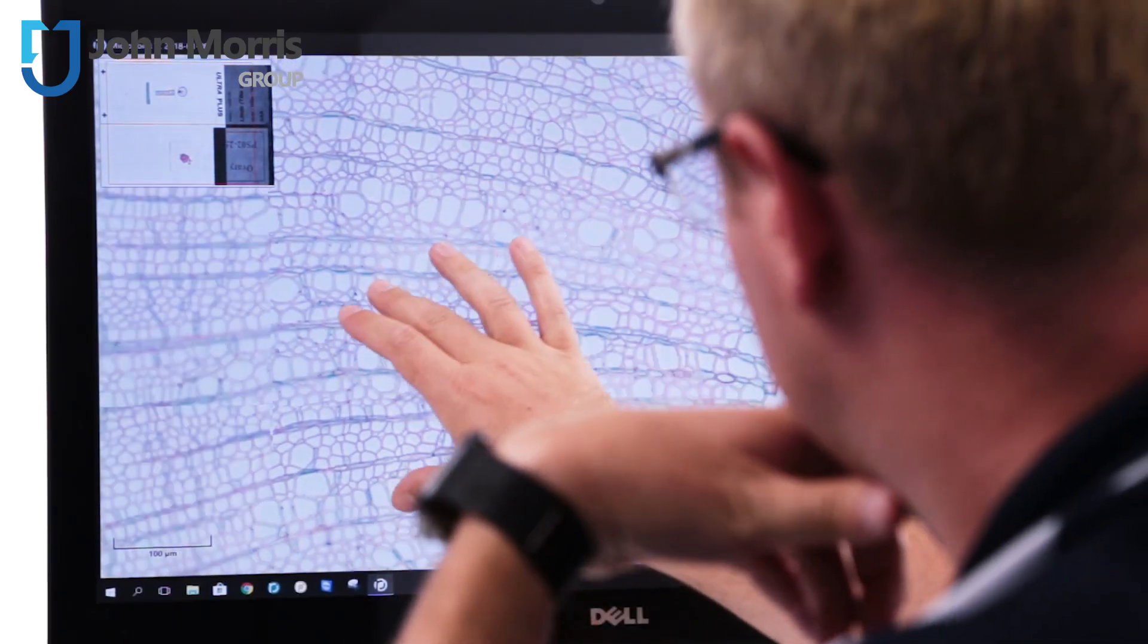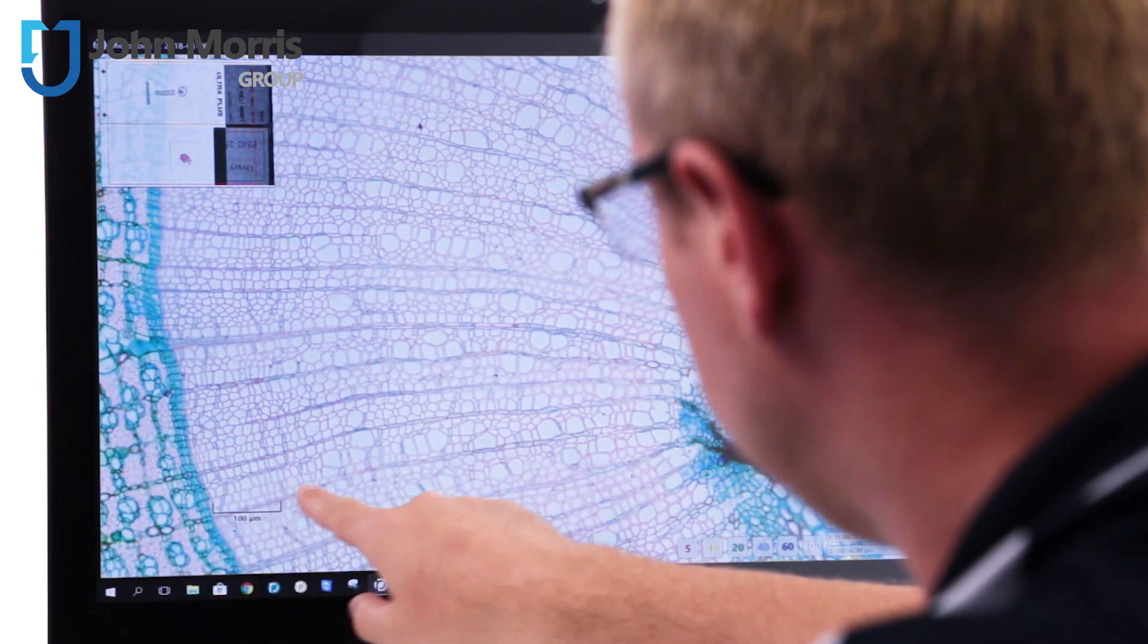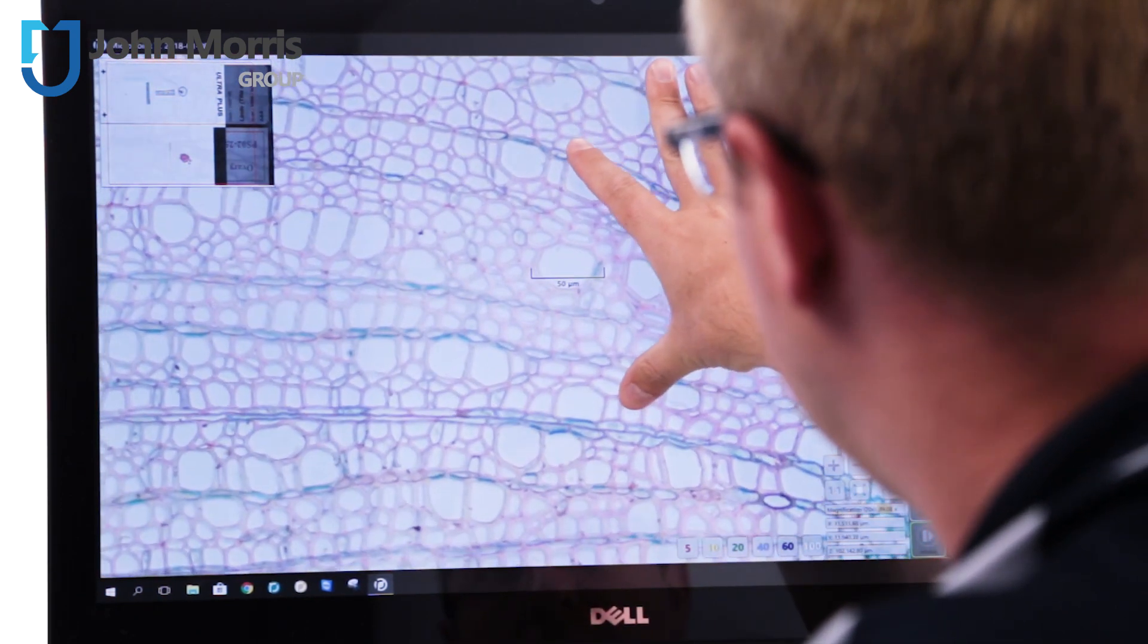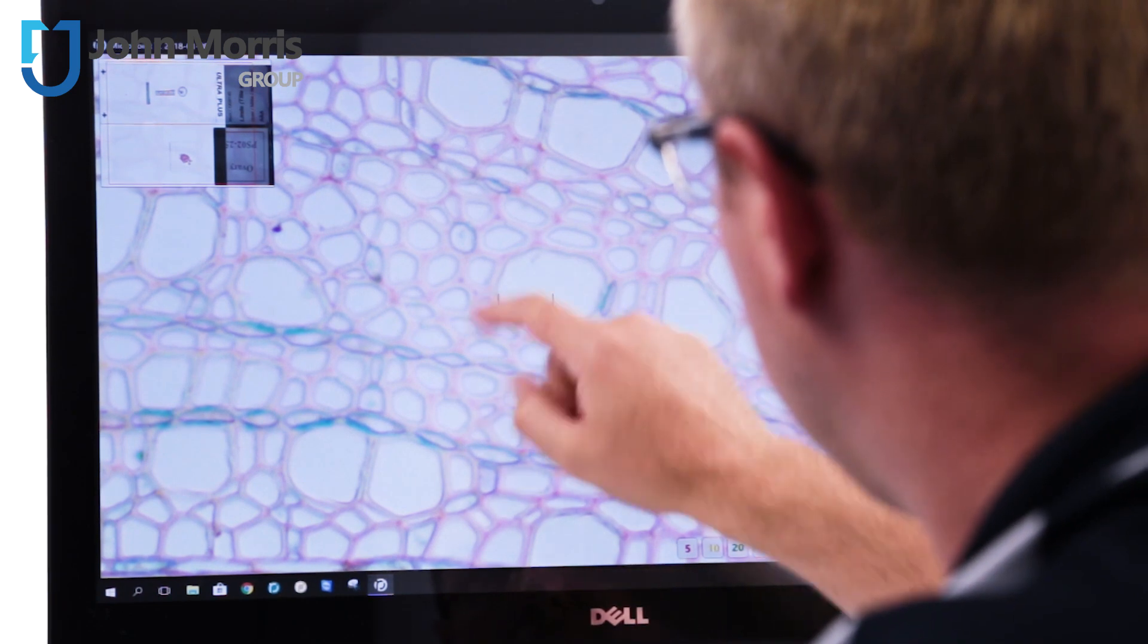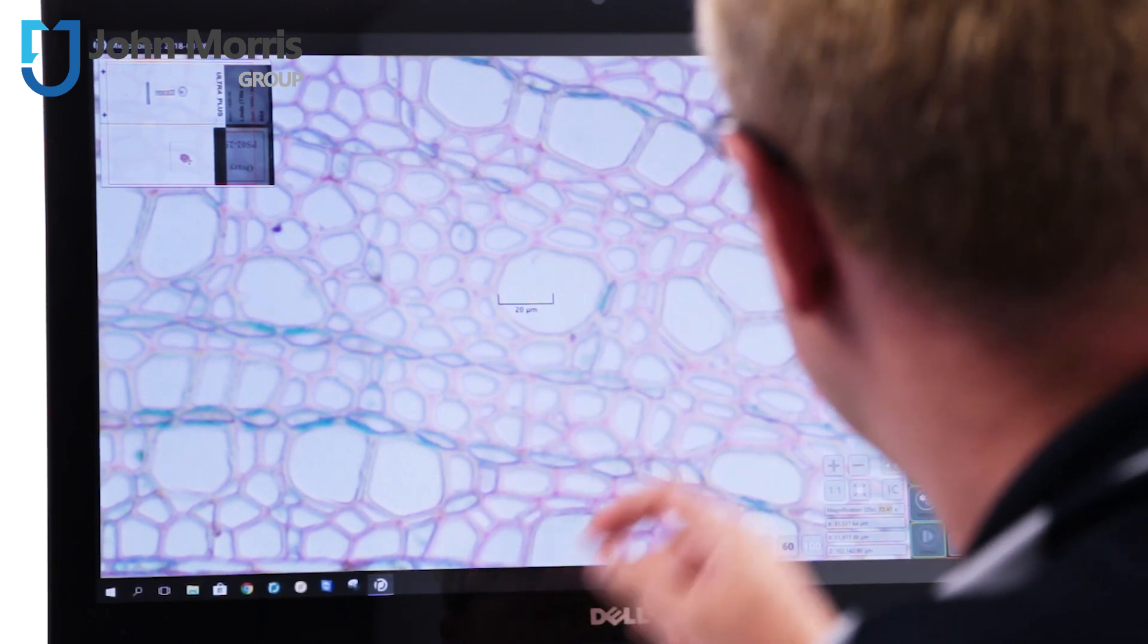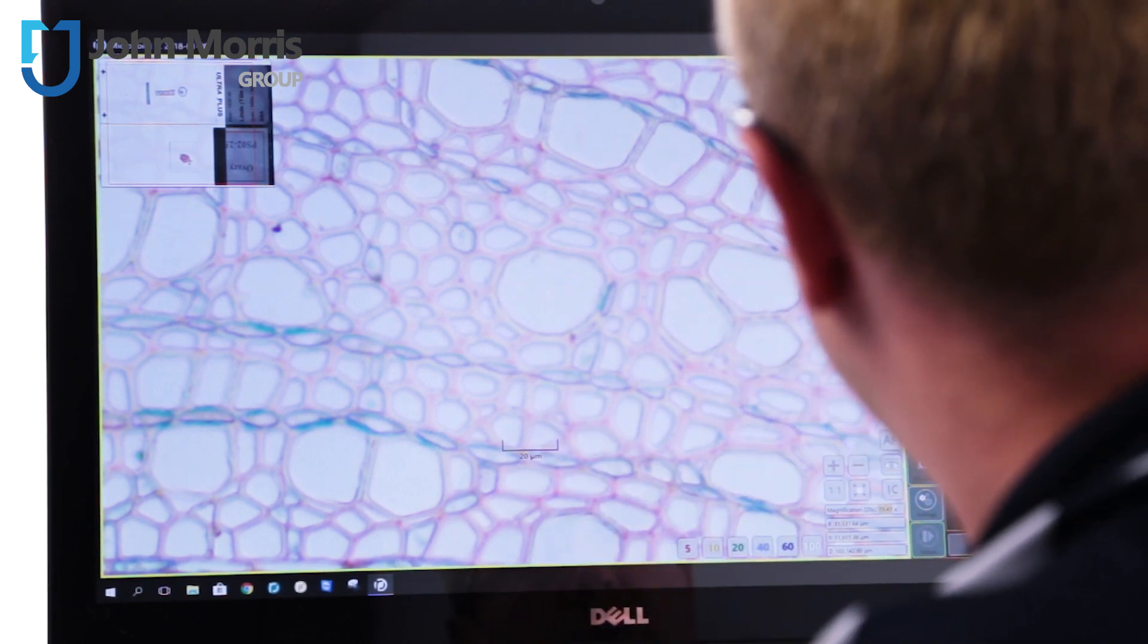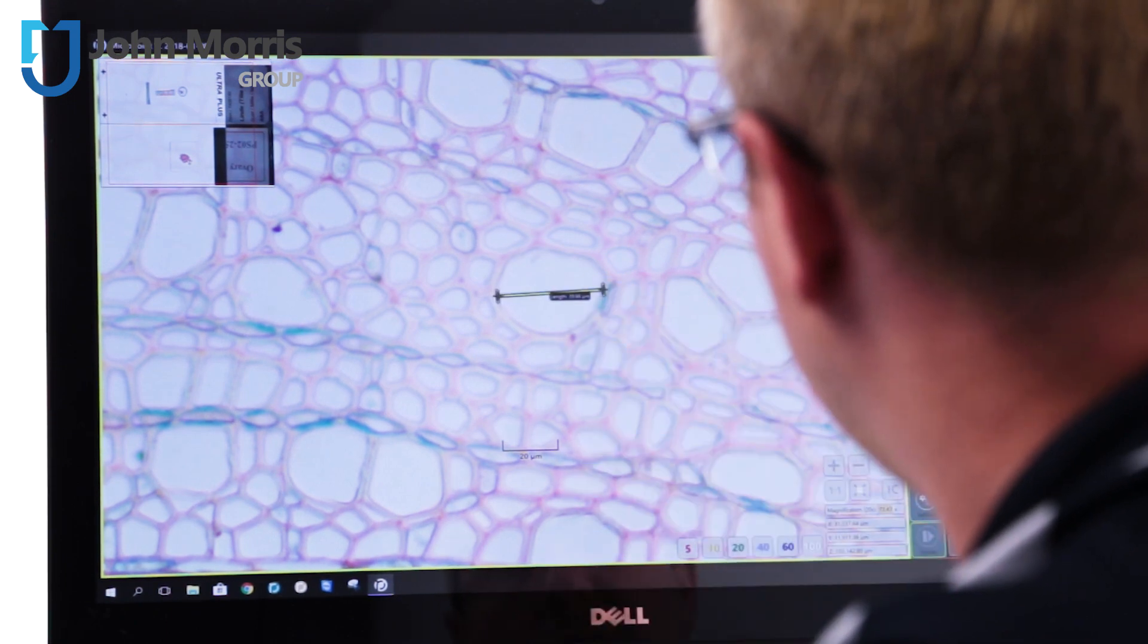So as we change our zoom here you'll notice there's a scale that's actually changing and that's really handy because you can slide that around and have a look at an object to get an understanding of its size. We've also got a number of tools there if that's not going to work for you. We can have a look and draw a line to have a look at the length of something.